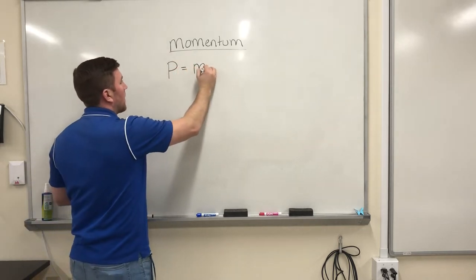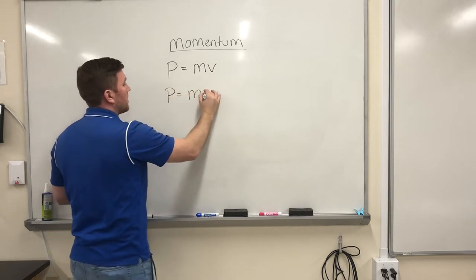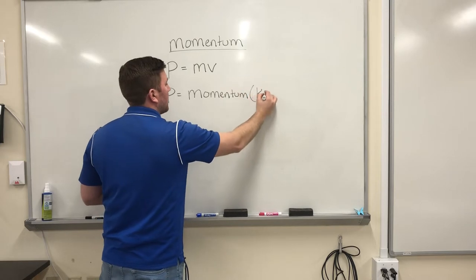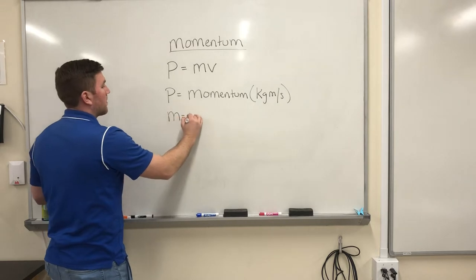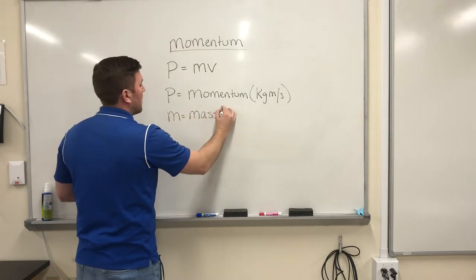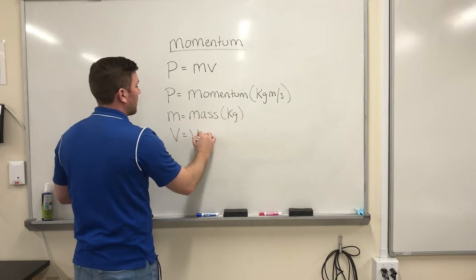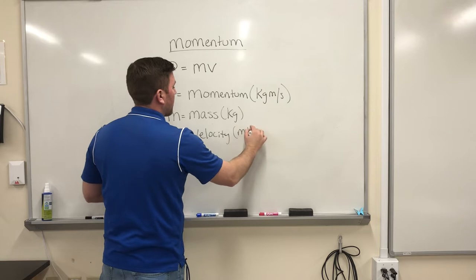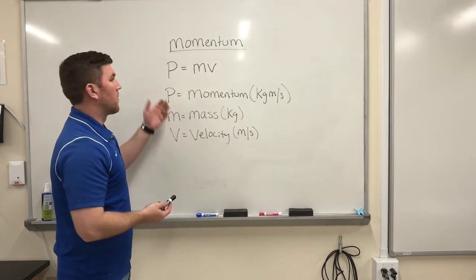So p equals mv. P stands for momentum, and we measure momentum in kilogram meters per second. The m stands for our mass, and we measure it in kilograms. And the v stands for velocity in meters per second. So it's pretty straightforward. Anything with a mass and a velocity is going to have momentum.